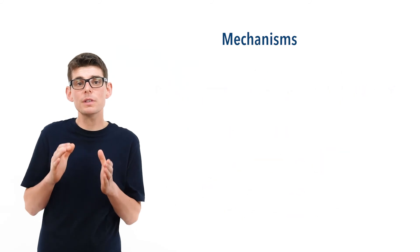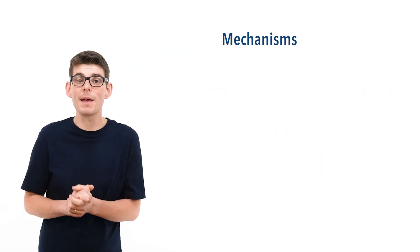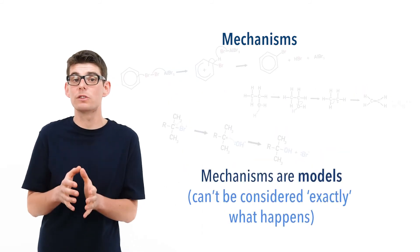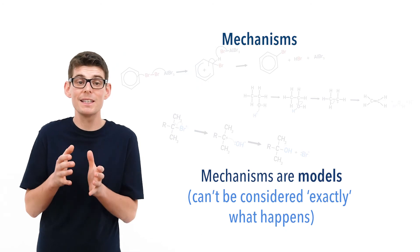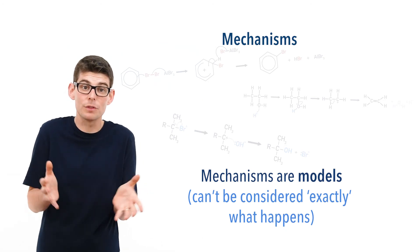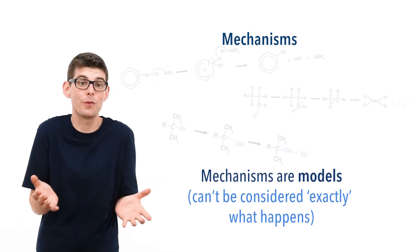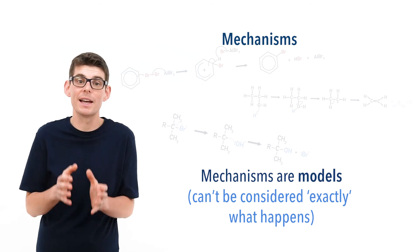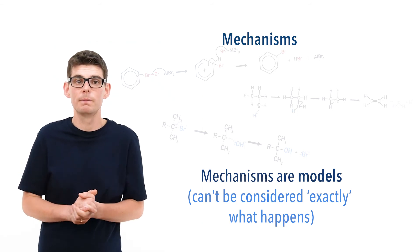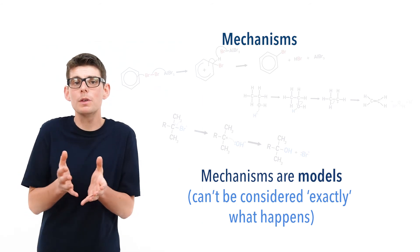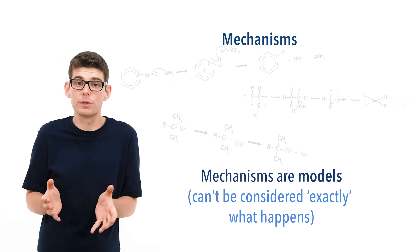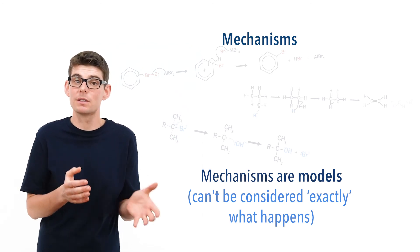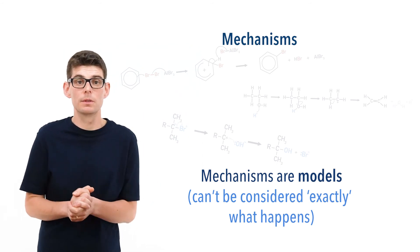It is important to understand that mechanisms are models — they can't be considered to show exactly what occurs. Electrons and atoms don't follow rule books, and reactions are never as clear as we represent them to be. Without using these models though, we would find it really hard to make progress in the study of organic reactions.